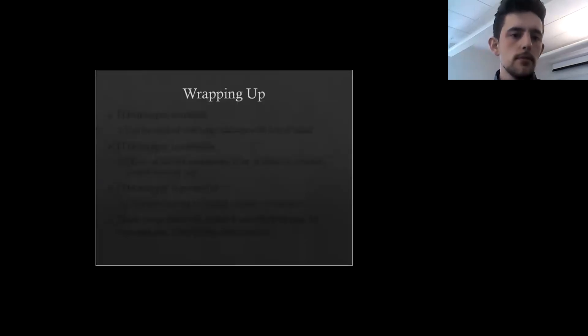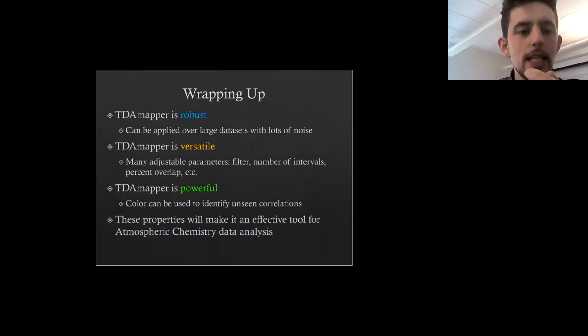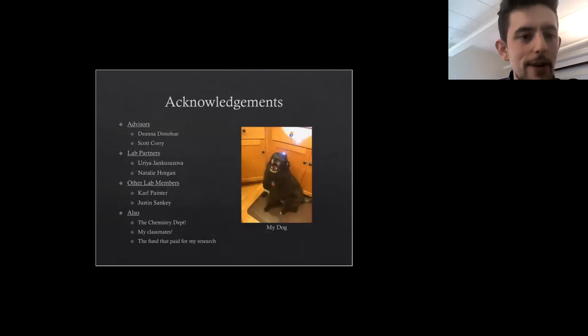Wrapping up: TDA mapper is a very robust method. We can apply it to large data sets with a lot of noise. It's also very versatile. It has many adjustable parameters like filter, number of intervals, percent overlap, etc. And finally, it's very powerful because the color can be used to identify unseen correlations. These properties will make it an effective tool for atmospheric chemistry data analysis. I want to acknowledge my advisors, Deanna and Scott, my lab partners, Uria and Natalie, other lab members, Carl and Justin, and of course, the chemistry department as a whole, my classmates, and the fund that paid for this research. And here's a picture of my dog, because why not? That's all I have for you.